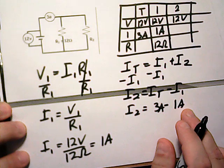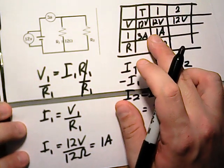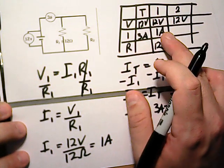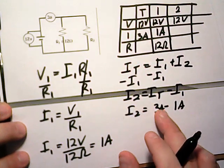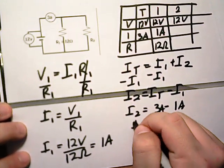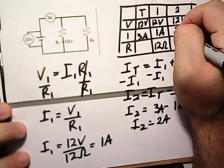So you can look at it this way, or you can just know that these two have to add up to the third one. So 2 plus 1 would give us 3, or 3 minus 1 would give us 2. So we have 2 amps here.